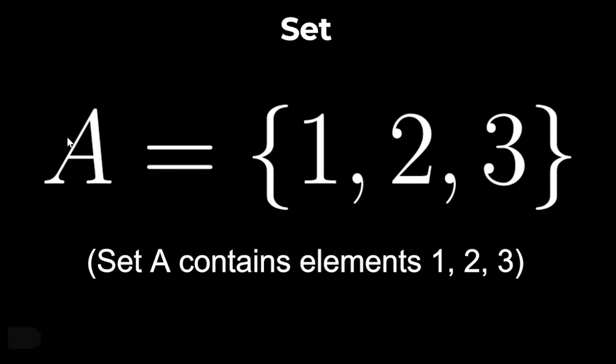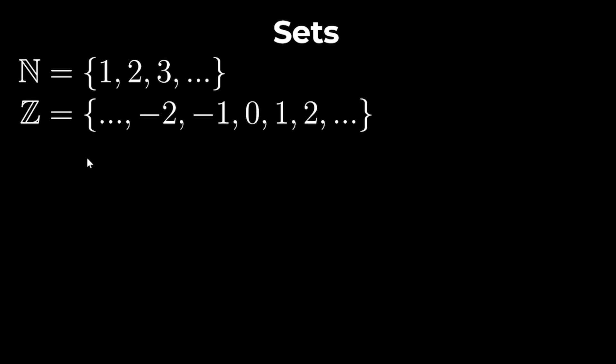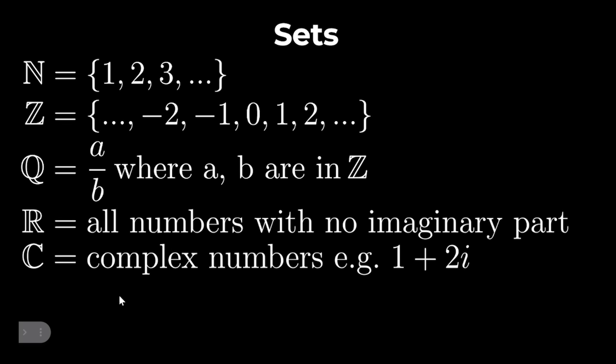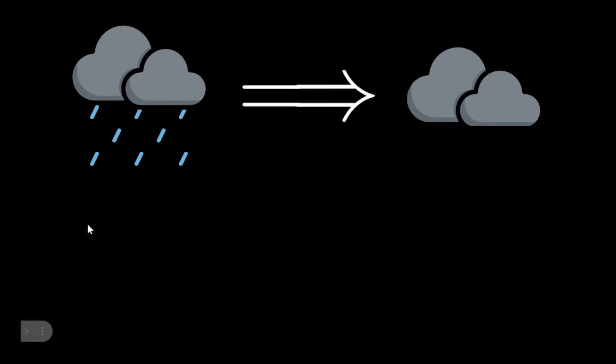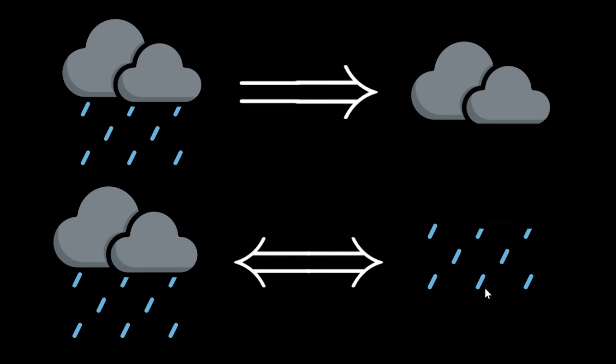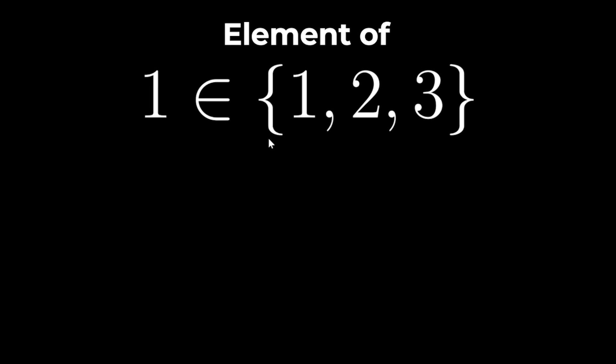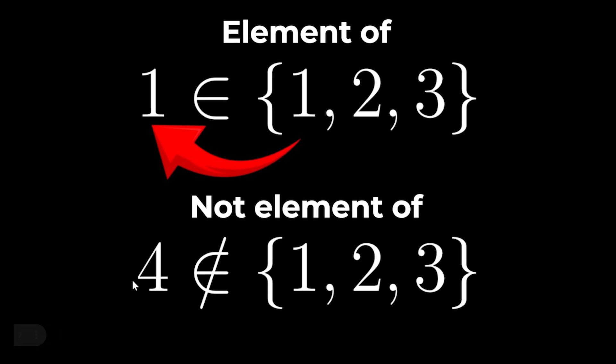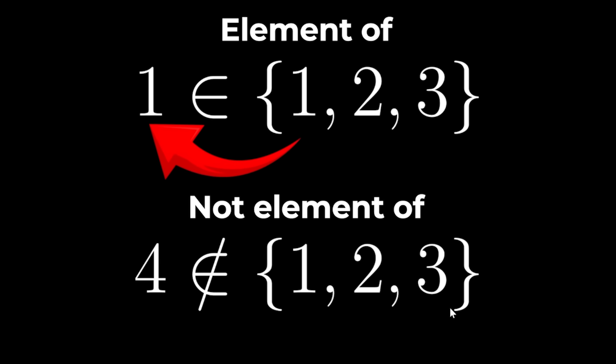Set theory. Curly braces define a set as a list of its elements. The most common sets are the natural numbers, the integers, the rational numbers, the real numbers, the complex numbers and the prime numbers. And you can also say it's raining if and only if there is water coming out of the sky. 1 is an element of the set 1, 2, 3 because 1 appears in the set. But 4 is not an element of the set 1, 2, 3.